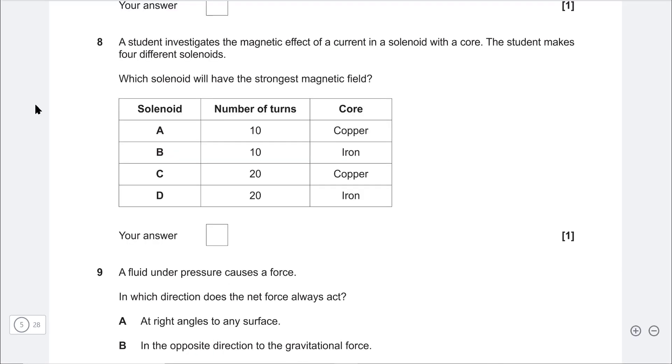Next one. A student investigates the magnetic field or the magnetic effect of a current in a solenoid with a core. So they make four different solenoids. Which one of them will have the strongest magnetic field? The higher the number of turns, the greater the effect of the solenoid, the greater the induced EMF. So the highest number is 20, so it's either going to be C or D.